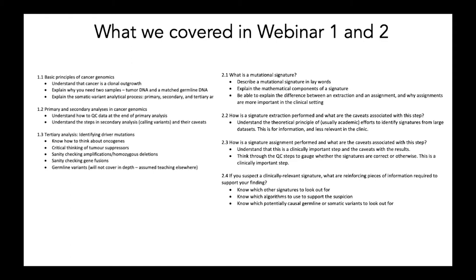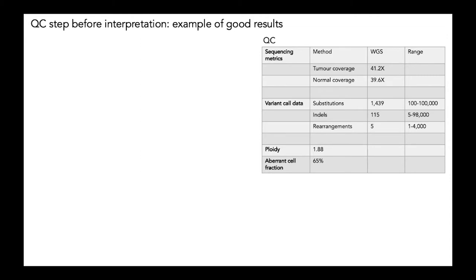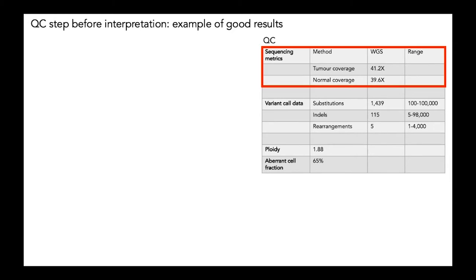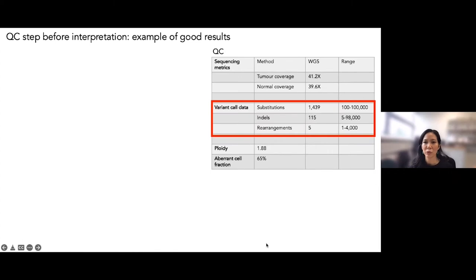The first thing I want to cover is some basic QC when you get a whole genome — basic things to think through right at the start before you say yes, I can interpret this cancer genome or not. When you get your report, you'll get information like tumor and normal coverage. We'd like to see over 40x for the tumor and over 30x for the normal. You'll also get some basic information about the total numbers of mutations, and it's helpful to do a sanity check that these numbers fall in the range you'd expect for your tumor type.